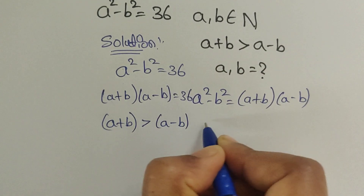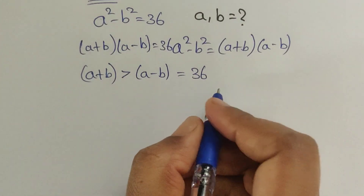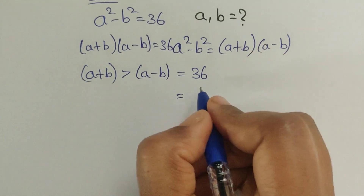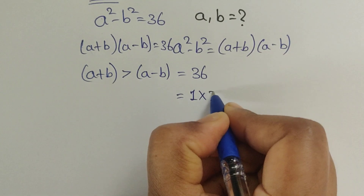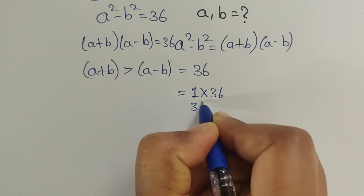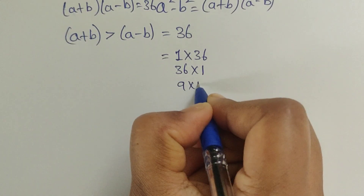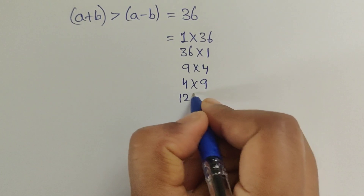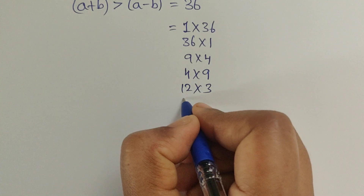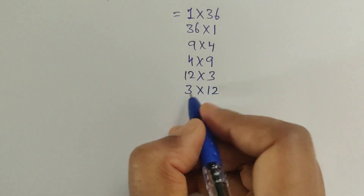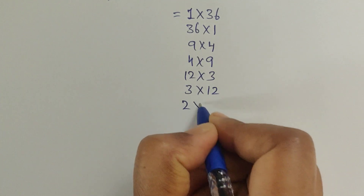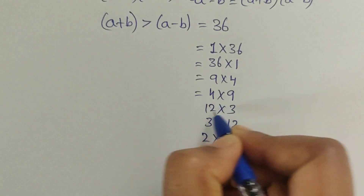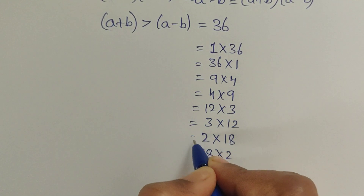We need to find the factors of 36. The factor pairs are: 1×36, 36×1, 9×4, 4×9, 12×3, 3×12, 2×18, and 18×2. These are all the factor pairs of 36.